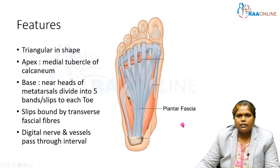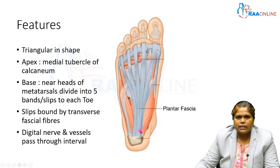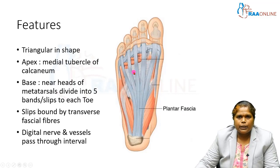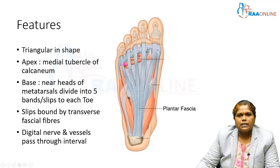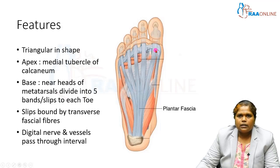Looking at the features of plantar aponeurosis, it is triangular in shape. The apex is attached to the medial tubercle of the calcaneum, and the base is near the heads of the metatarsals. The base divides into five slips, one going to each toe, and these slips are bounded by transverse fascial fibers.